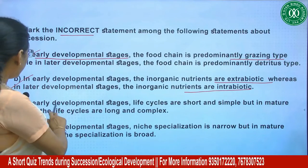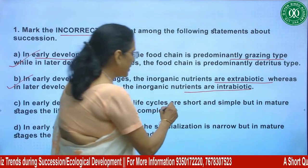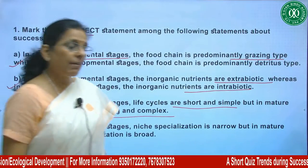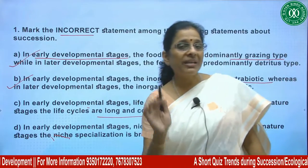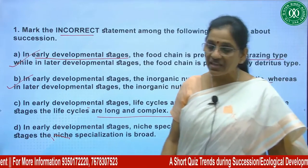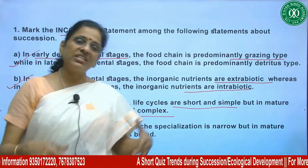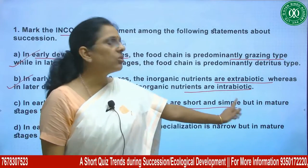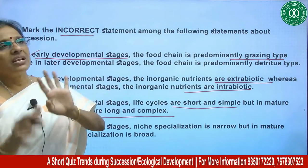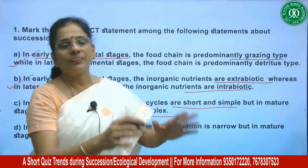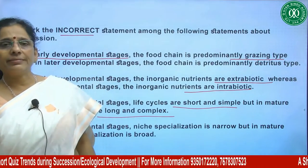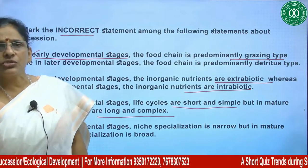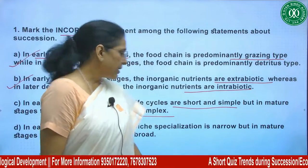In early developmental stages life cycles are short and simple, but in mature stages the life cycles are long and complex. This relates to r-strategists and K-strategists. In early/immature stages species are mostly r-strategists with short, simple life cycles — they complete their life cycle quickly and move on. Later stages have K-strategists with longer, complex life cycles and parental care. So this point is also correct.